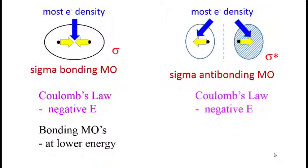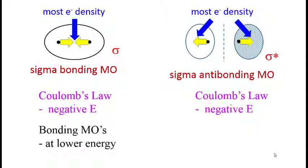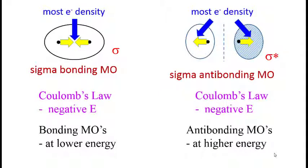Coulomb's law would tell us that the energy associated with like charges repelling is positive. What we'll find is that antibonding molecular orbitals are always at higher energy than the atomic orbitals from which they came.